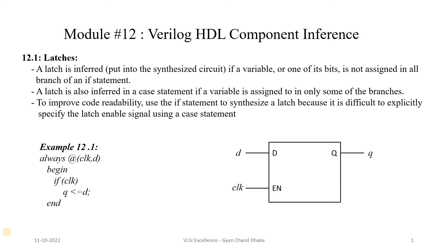Welcome to our 12th module of Verilog HDL Crash Course. In this module we are going to cover Verilog HDL Component Inference — that means how different digital components get inferred from a Verilog HDL. When we write a Verilog RTL code and synthesize it, it gets converted into a netlist containing different digital components. How a particular RTL code gets transferred into a corresponding digital component is nothing but component inference.